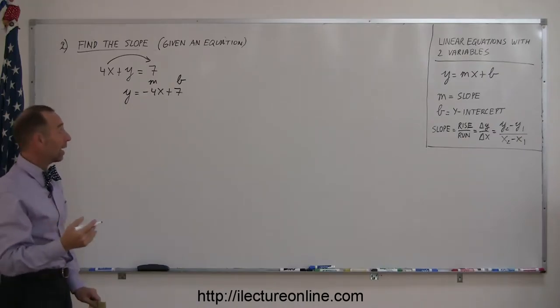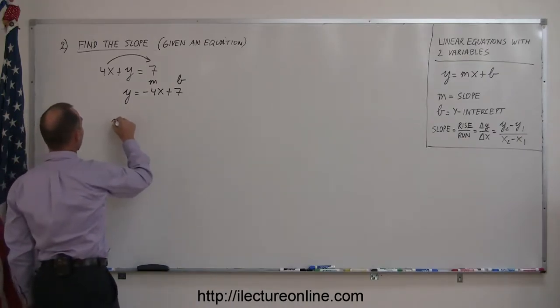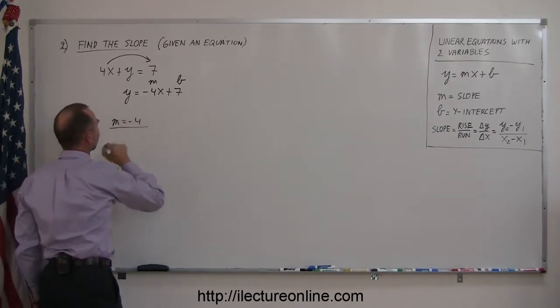So, in this case, you can just read it right off. Say, okay, m equals negative 4, and you're done.